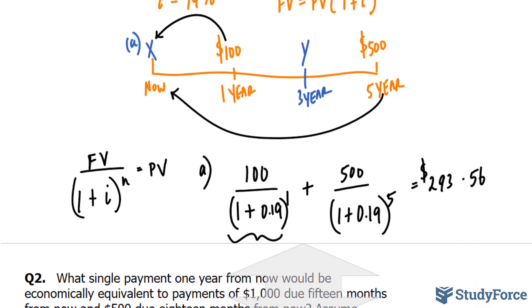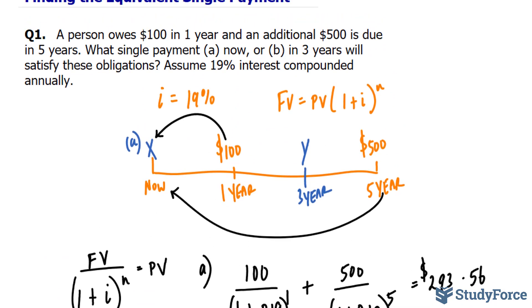Moving on to part B, what single payment in three years will satisfy these obligations? This time the focal date is three years from today. That means we need to forward this two years and discount this two years. What is the future value of that debt two years from when it's due? And what is the present value of this debt two years prior?